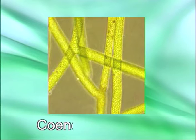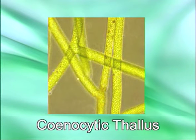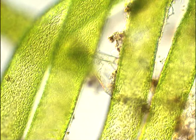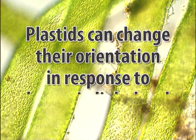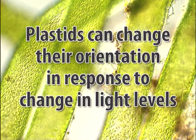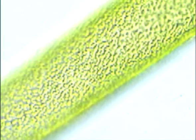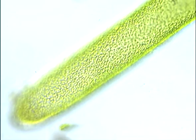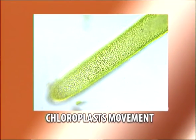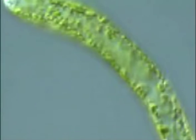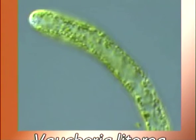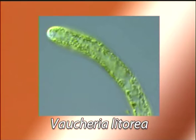In Vaucheria, cytokinesis is not followed by mitosis, so the thallus has a siphonous nature. Plastids can change their orientation in response to changes in light levels. Chloroplasts, along with small vesicles and mitochondria, move with the streaming of cytoplasm along the longitudinal axis of the filament. Cytoplasmic fibrils have been reported in Vaucheria littorea.